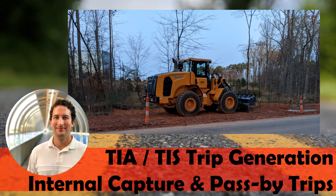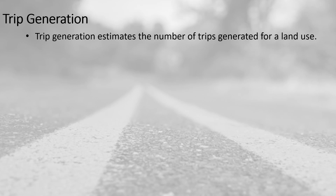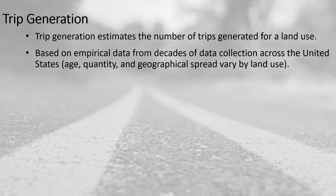The number of trips generated to a proposed development is essential for a traffic impact analysis or traffic impact study. An important part of that is also looking at the modes that may be using the site, as well as internal capture and pass-by trips. Trip generation is generally an estimate of the number of trips generated for a particular land use, based on empirical data from decades of data collection across the United States. The age, quantity, and geographical spread of that data vary by land use.